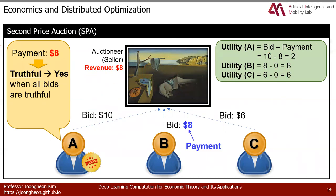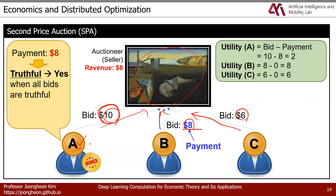In a second-price auction, A still wins with the highest bid of $10, but only pays the second-highest price — $8. The auctioneer earns $8. A's utility is $10 (value) minus $8 (payment) = $2. The reason we use second-price auction is truthfulness: suppose a malicious user bids a fake $100. They win, but pay the second price. If the real value is $8 and they pay $10, they get negative utility — discouraging dishonest bidding.